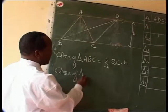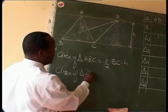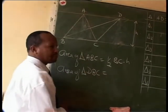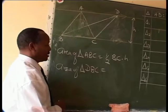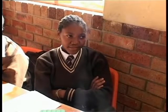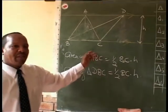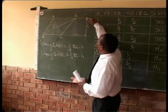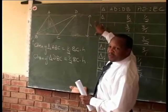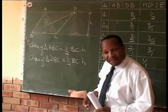The area of triangle DBC is also half BC times height. Since the perpendicular heights of the two triangles are the same — because they are between the same parallel lines — the areas are equal. The conclusion: triangles between parallel lines that share the same base and height have equal area.